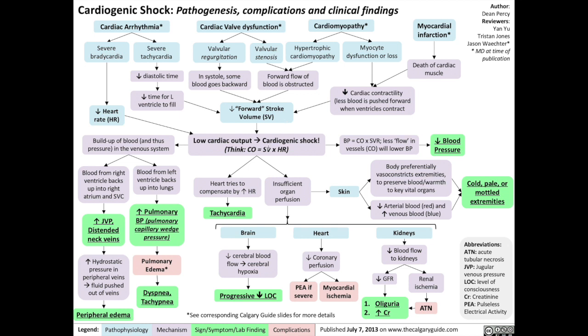In a state of reduced cardiac output, because blood pressure depends on cardiac output, that results in reduced blood pressure. Further, with reduced cardiac output there's going to be a buildup of blood and pressure in the venous system, so blood from the right ventricle backs up into the right atrium and the superior vena cava, resulting in blood backing up into the jugular veins, increasing the patient's JVP — jugular venous pressure. Increased hydrostatic pressure in the peripheral veins also means that fluid will be pushed out of those veins, leading to peripheral edema.